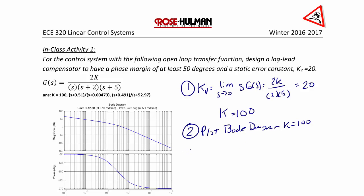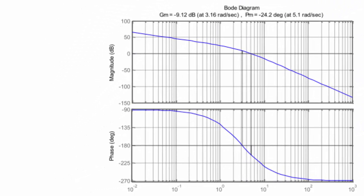For step three, we have that our desired phase margin, this is given in the problem statement, is 50 degrees. And if we look at the Bode diagram, we can see here that our current phase margin